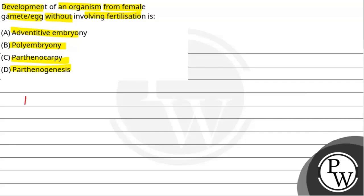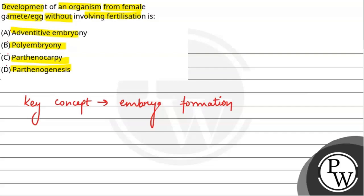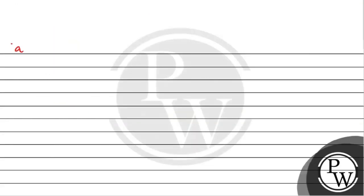So the key concept in this question is Embryo Formation. Hum different types of methods padhenge jisse Embryo Formation occur hota hai nature mein, aur ab hum option-wise discuss karenge saari processes jo is question mein given hain. Start karte hain Adventitive Embryony se.